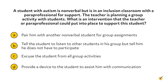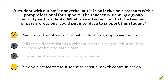Let's look at another passive versus active question. A student with autism is nonverbal, but is in an inclusion classroom with a paraprofessional for support. The teacher is planning a group activity with students. What is an intervention that the teacher or paraprofessional could put into place to support this student? Choice B tells the student to listen to other students in his group, but tells him he does not have to participate. And C excuses him from the group activities. Both of these are passive solutions, because they do not teach the student nor teach the class how to handle the problem. D is making a purposeful decision about how the student will be able to participate, so that would be the active response.